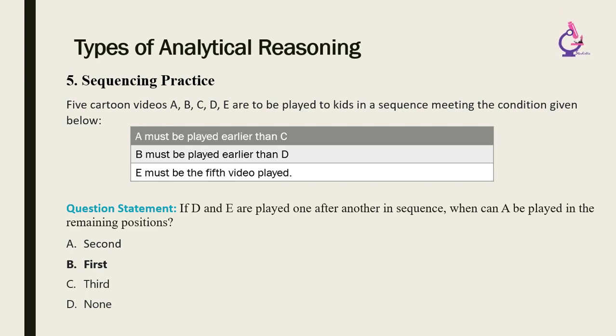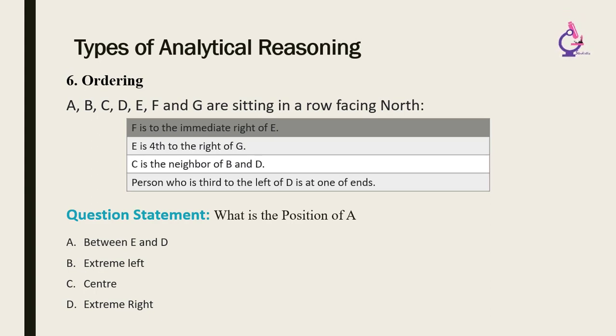Ordering questions require the student to put a number of items into the correct order. This could be chronological or procedural, for example. Chronological questions order elements in a time sequence. For example, John was born before Smith who was born before Paul who was born before Emma.